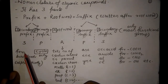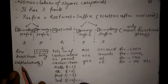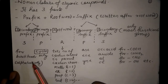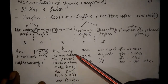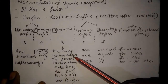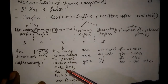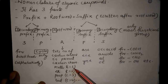Secondary prefixes for substituents should be written alphabetically. The root word tells the number of carbon atoms in the parent carbon chain: meth for 1 carbon atom, eth for 2 carbon atoms, prop for 3 carbon atoms, and but for 4 carbon atoms.